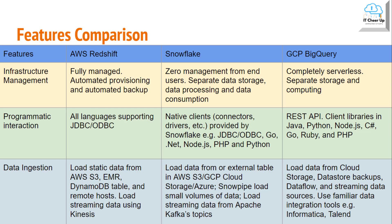In programmatic interaction, AWS Redshift supports all languages with JDBC and ODBC. GCP BigQuery supports REST API and client libraries in Java, Python, Node.js, C#, Go, Ruby, and PHP. Snowflake also supports JDBC, ODBC, Go, .NET, Node.js, PHP, and Python. It also supports native clients such as connectors, drivers, etc. provided by Snowflake.